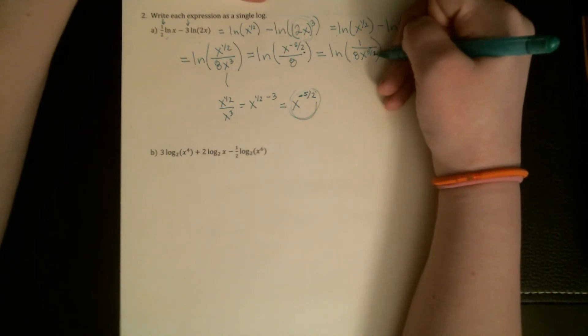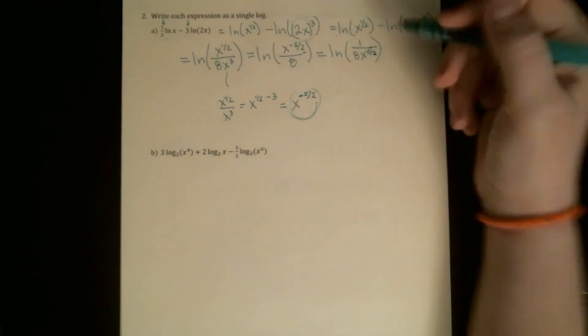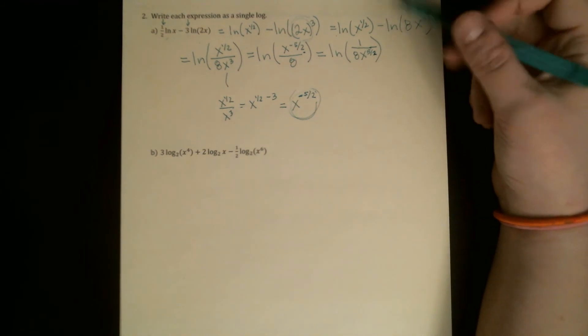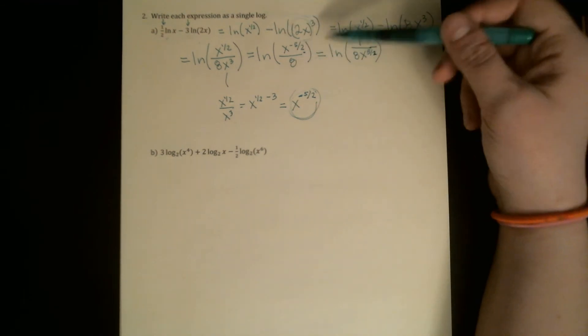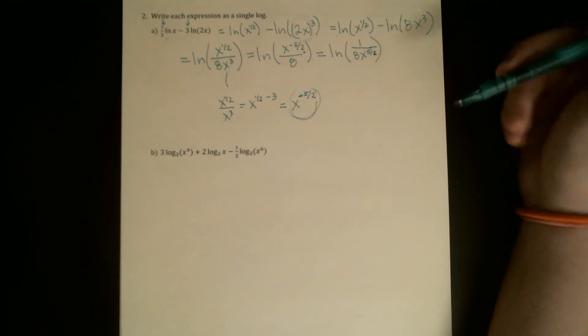The natural log of 1 over 8x to the five-halves is great. I don't care that there's some sort of root in the bottom, but I do want you to combine x's like that and I do want you to get rid of negative exponents.